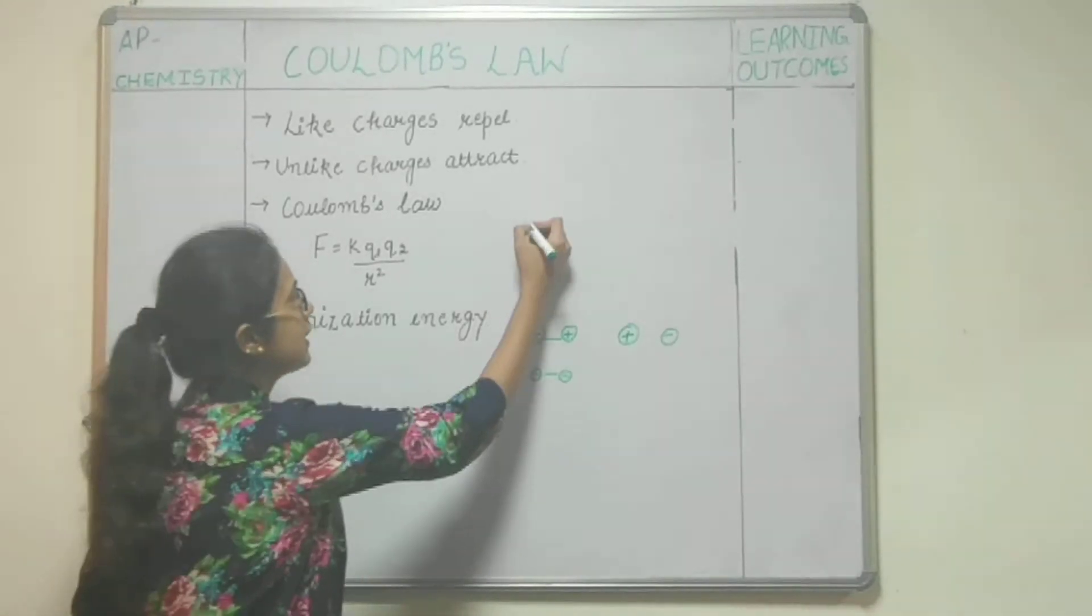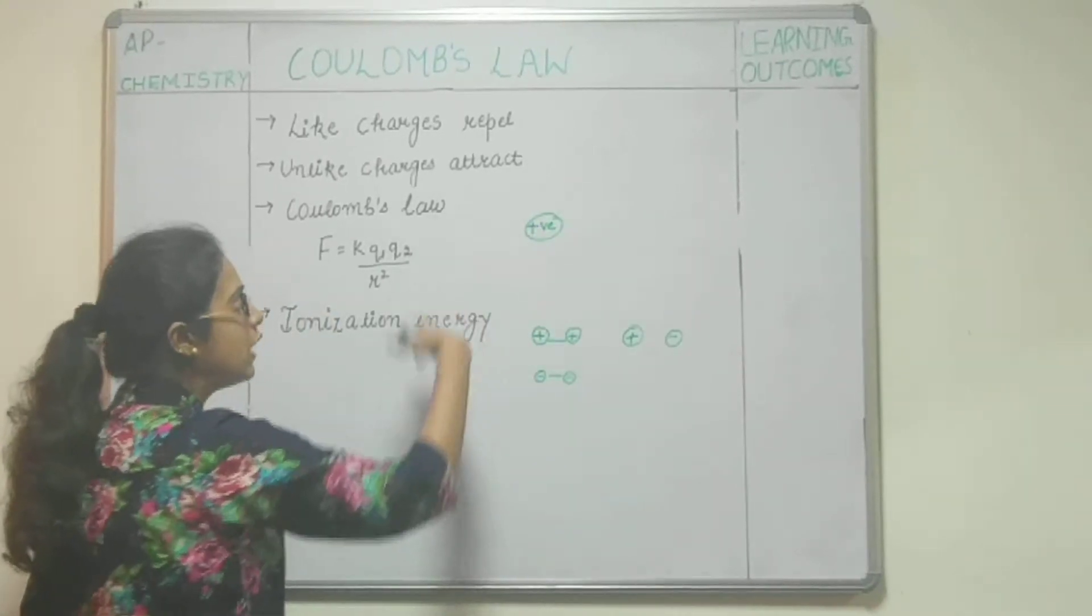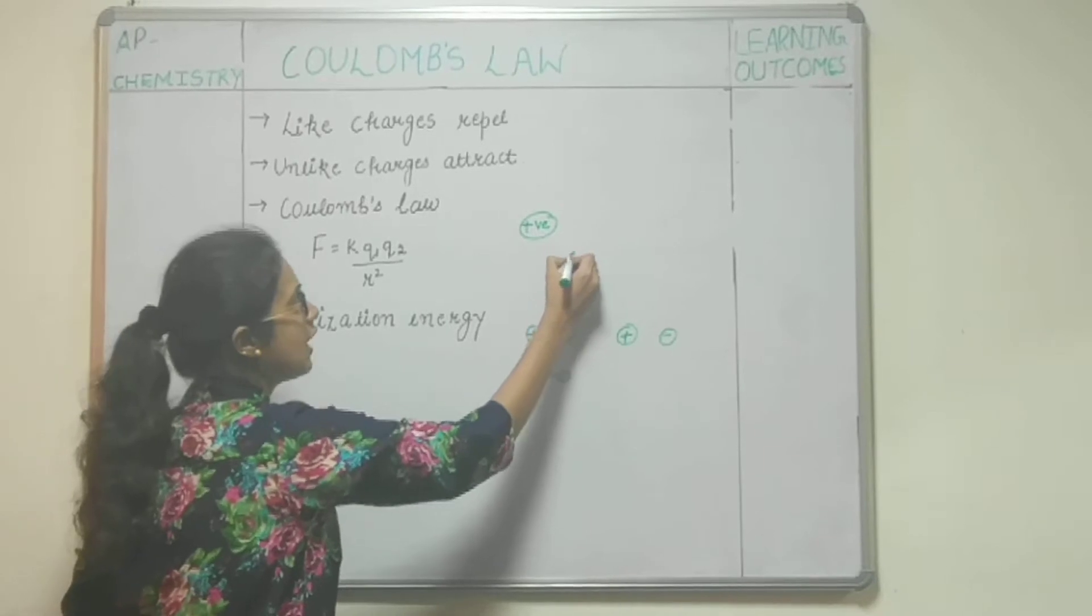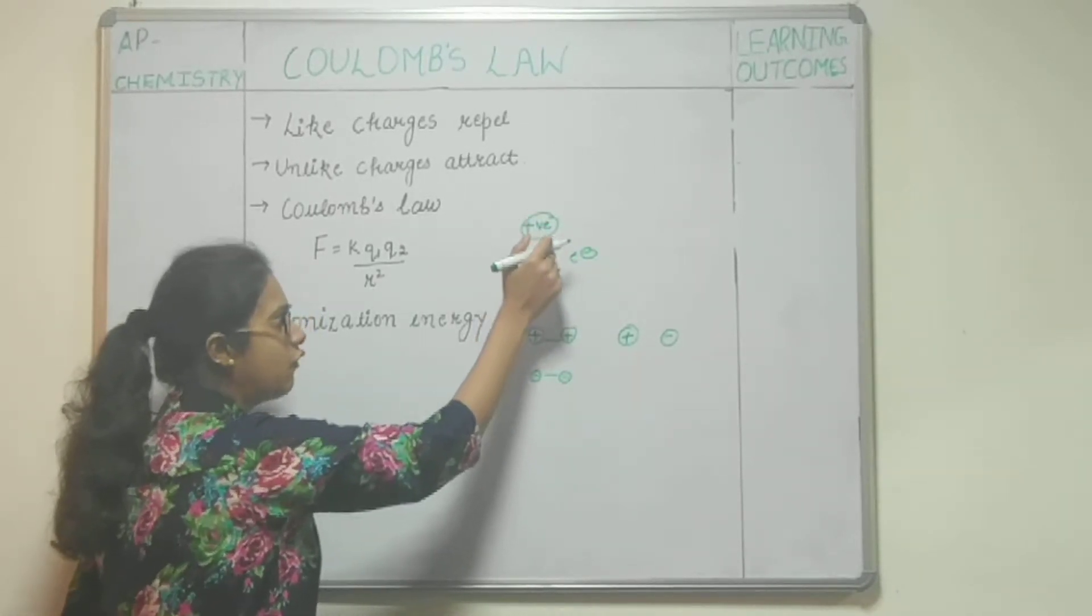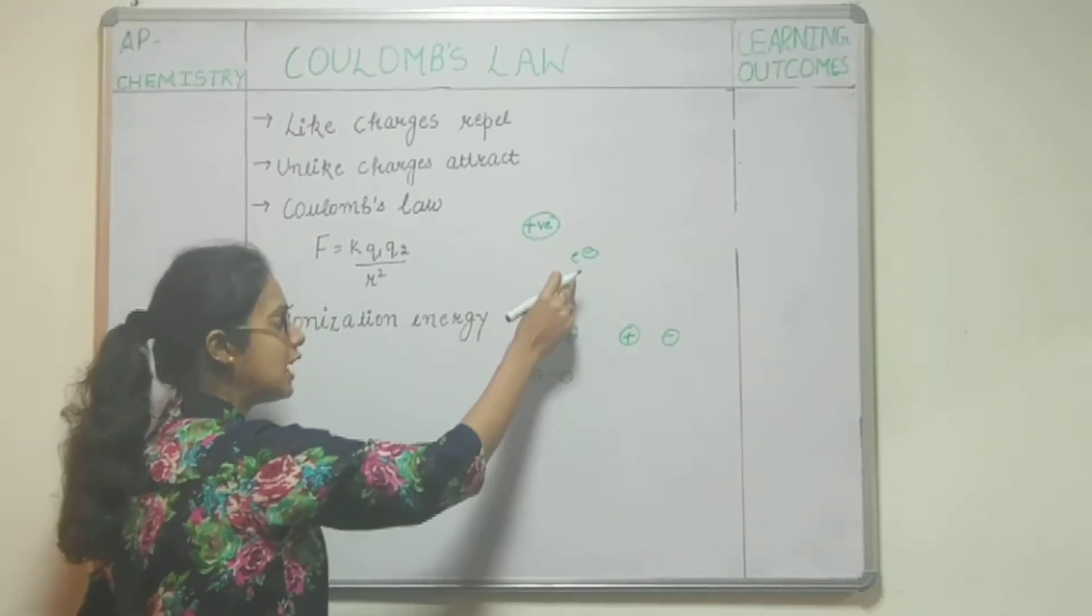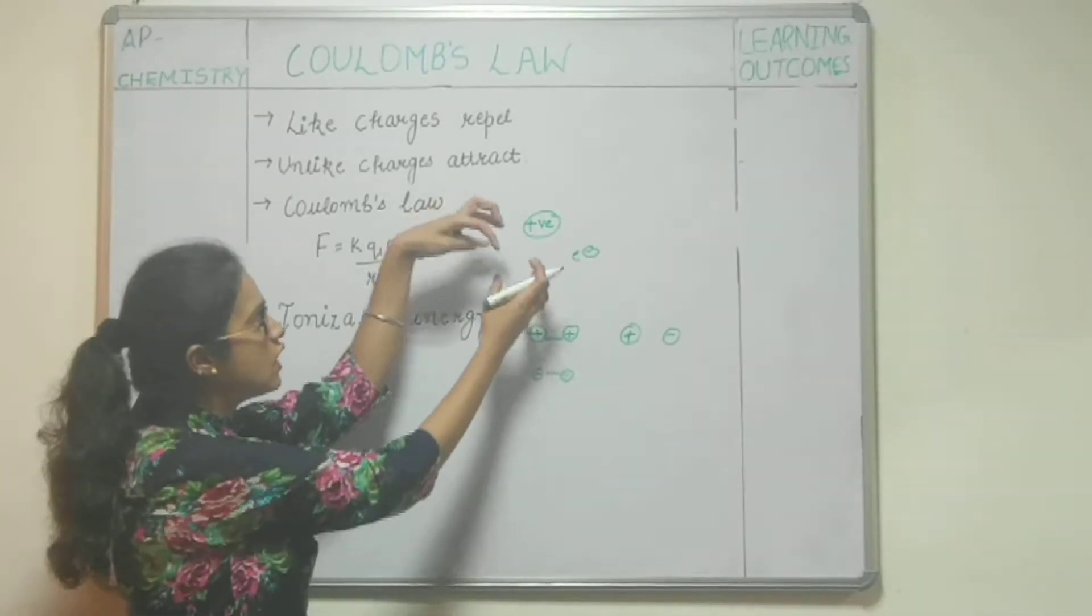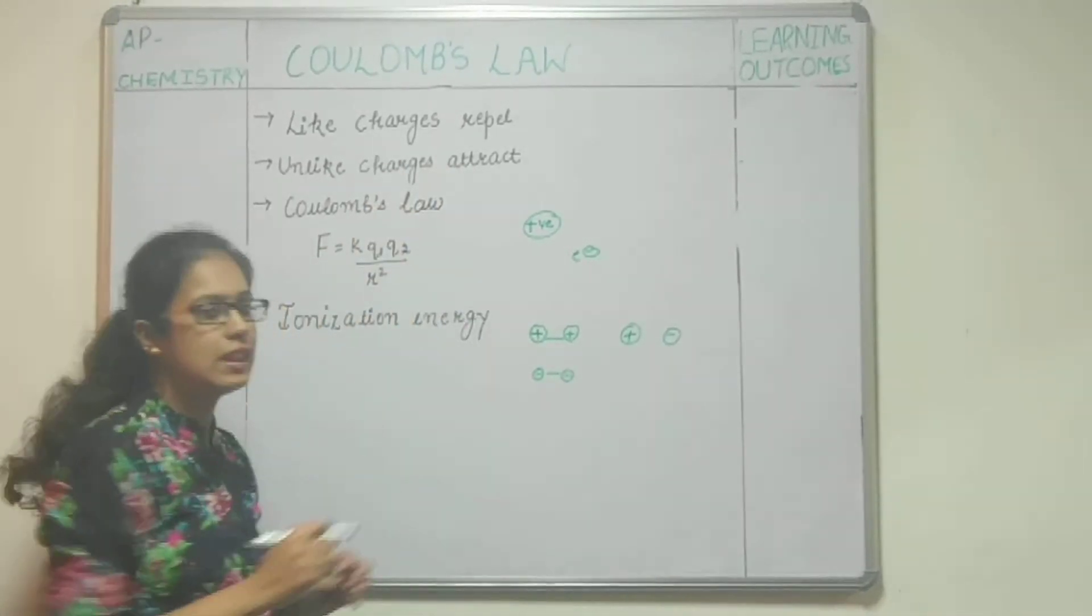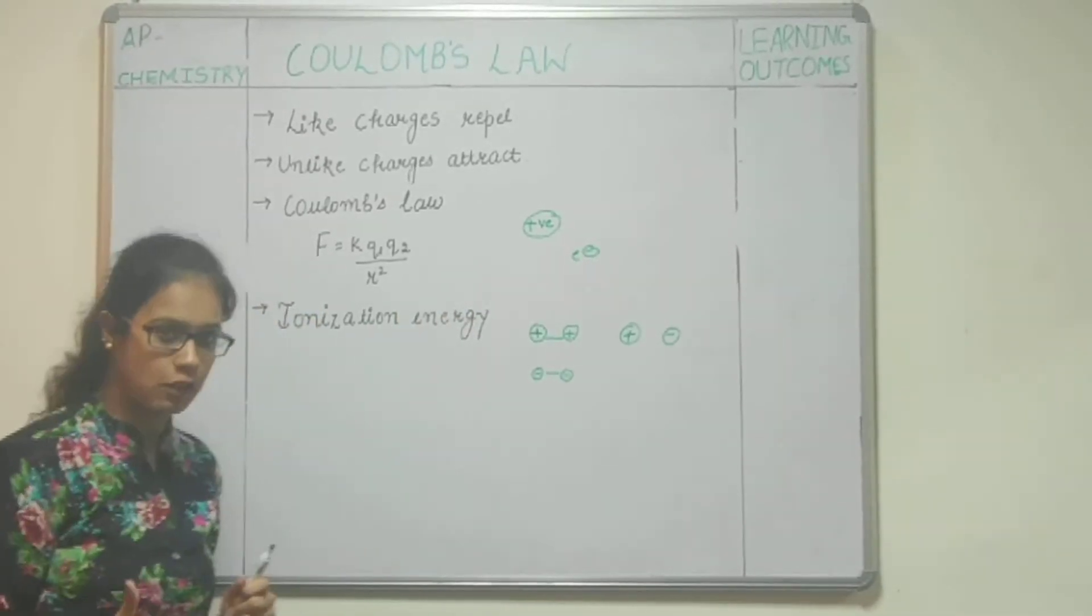As we know, the nucleus consists of positively charged species and surrounding shells contain electrons. There is an attractive force between this positive charge and the negatively charged electrons. Due to this attraction between them, it becomes very difficult to remove the electron from that atom.